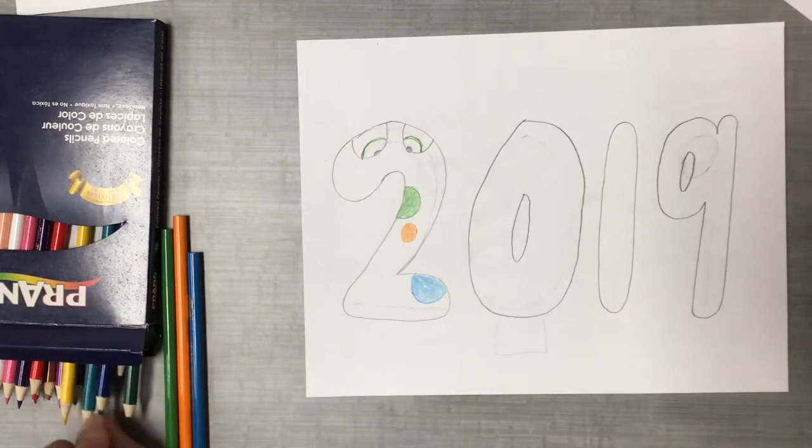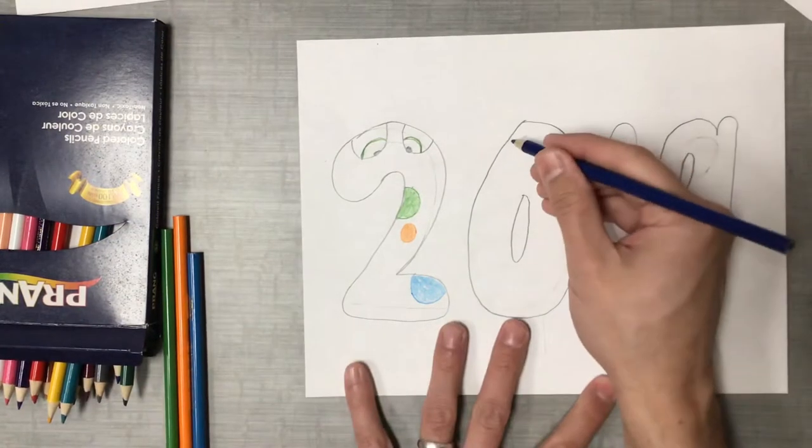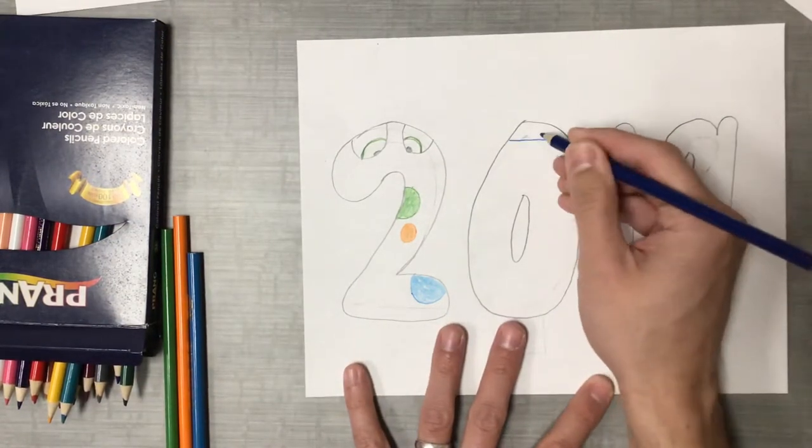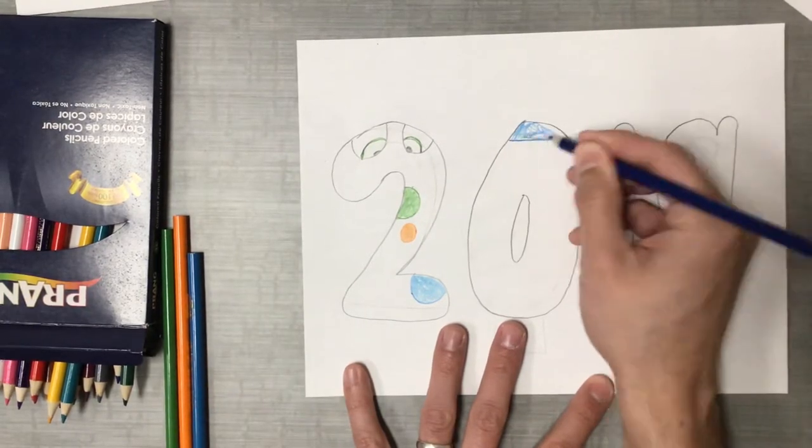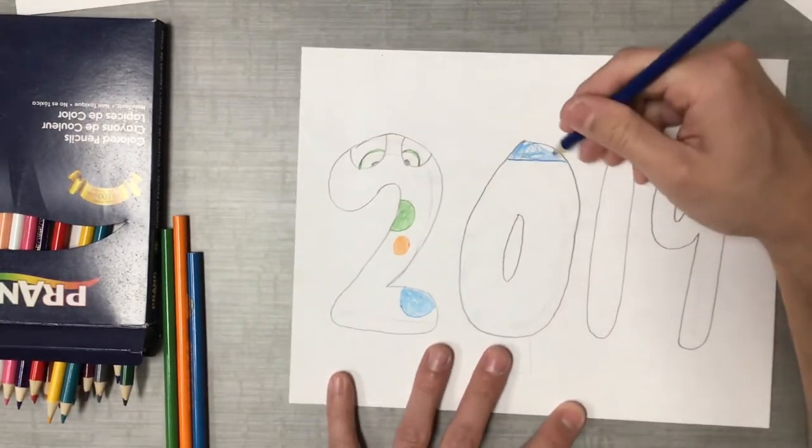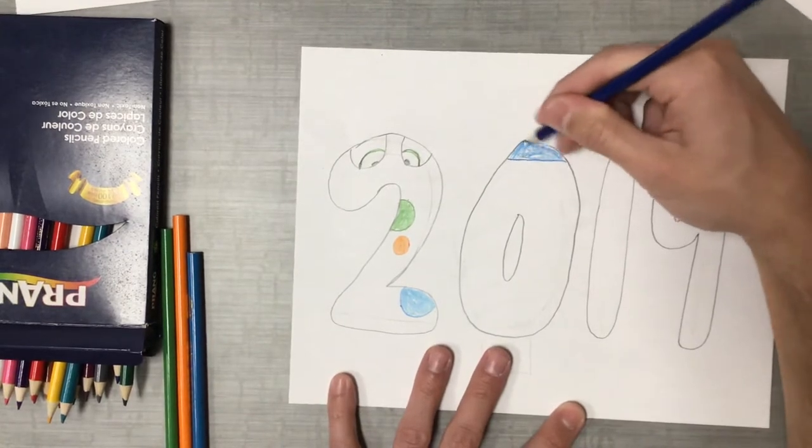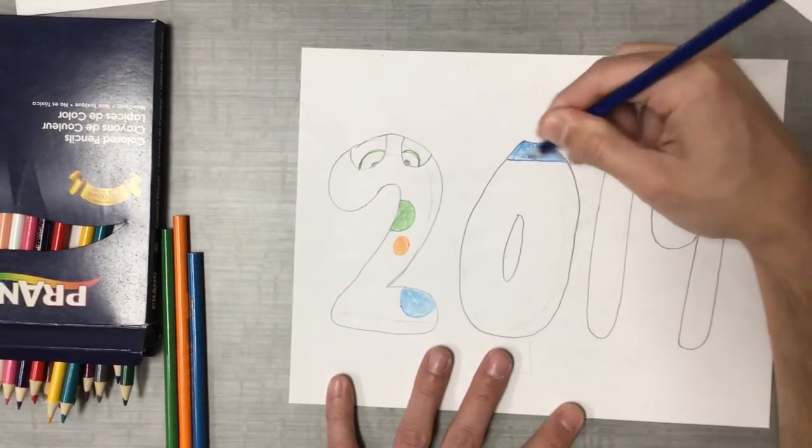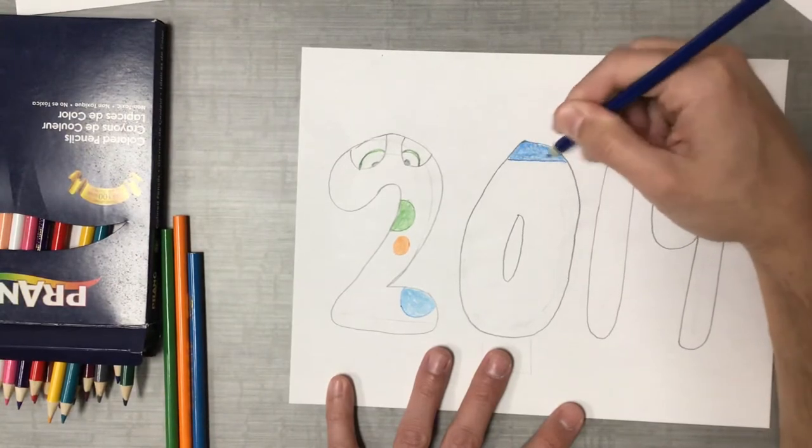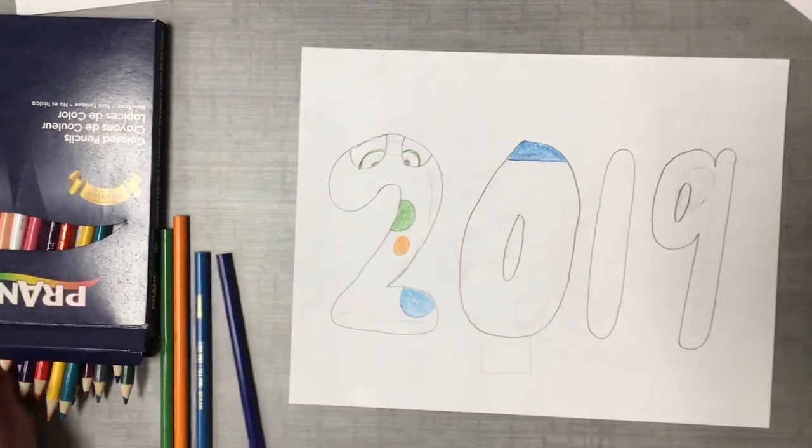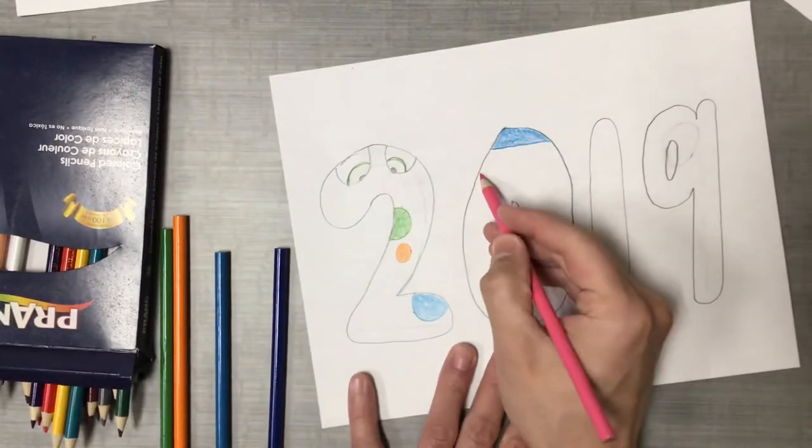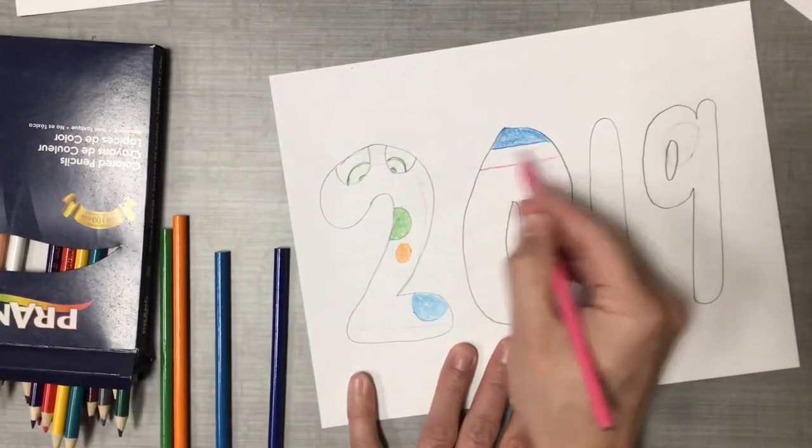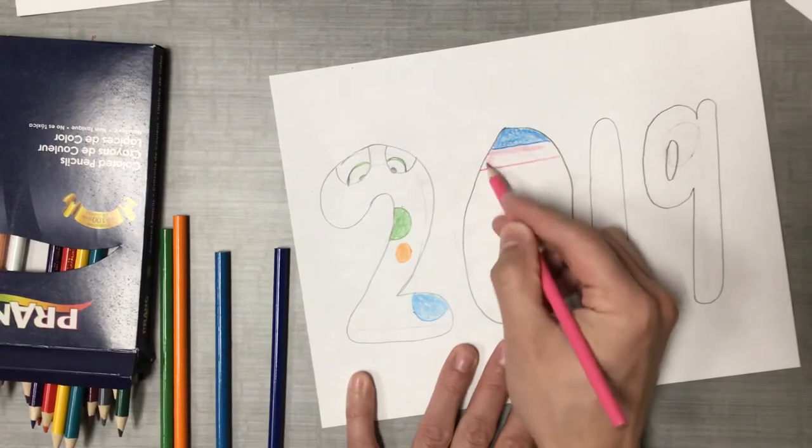Stripes always look nice. Remember don't just leave it looking like this. Finish it out while you have the color in your hand. A big part of art is having the patience and the diligence to finish out your coloring. I'll just go ahead in here and put another stripe. So stripes look really nice.